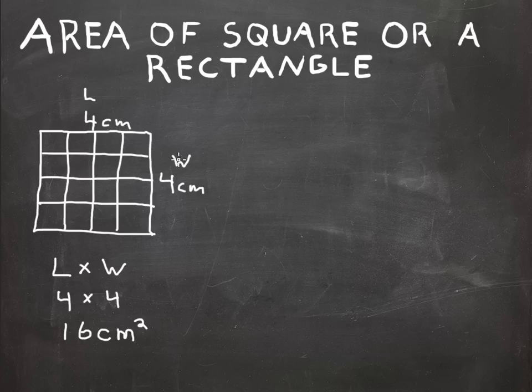The units also multiply. It's 4 centimeters by 4 centimeters, not just 4 by 4. You end up with 16 centimeters squared. The 16 is the two numbers multiplied.